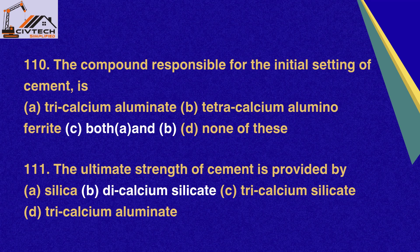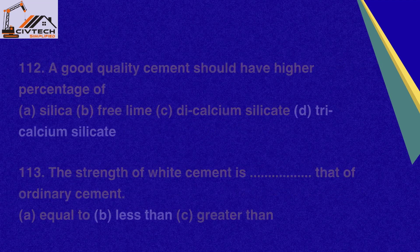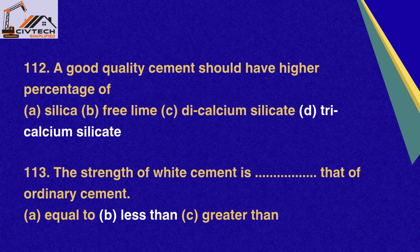Question 110. The compound responsible for the initial setting of cement is: A. Tri-calcium aluminate, B. Tetra-calcium alumino ferrite, C. Both A and B, D. None of these. Correct option C: Both A and B. Question 111. The ultimate strength of cement is provided by: A. Silica, B. Dicalcium silicate, C. Tri-calcium silicate, D. Tri-calcium aluminate. Correct option B: Dicalcium silicate. Question 112. A good quality cement should have a higher percentage of: A. Silica, B. Free lime, C. Dicalcium silicate, D. Tri-calcium silicate. Correct option D: Tri-calcium silicate.